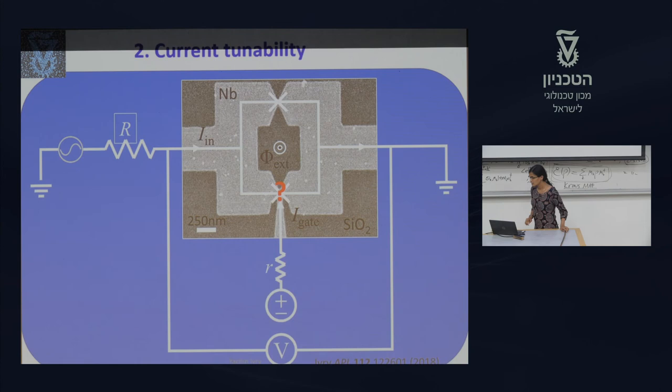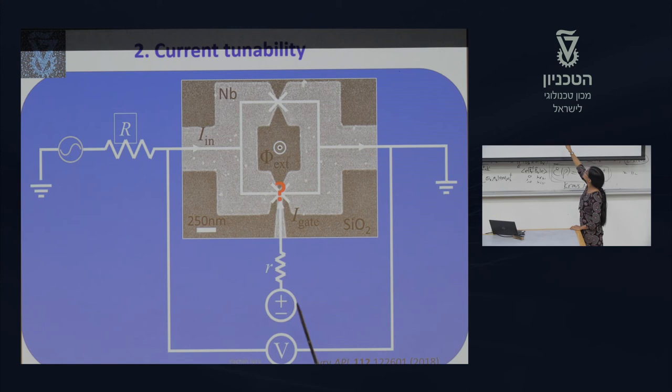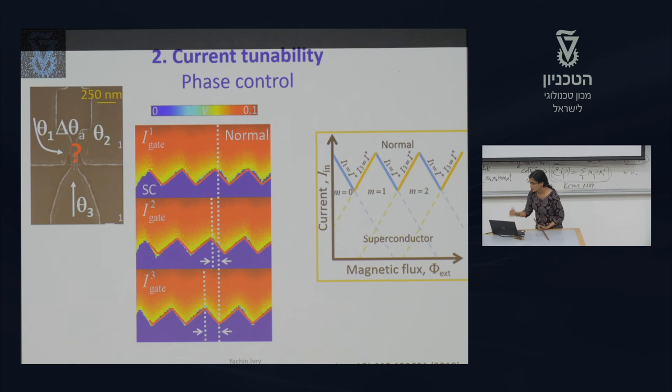This is one of the devices we fabricated in the lab. We have a SQUID and introduce external current by putting another material at the interface. By doing that, we can apply current externally and change the phase. This is another way of tuning the superconducting materials.